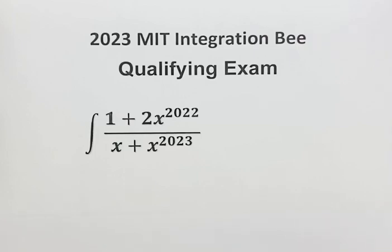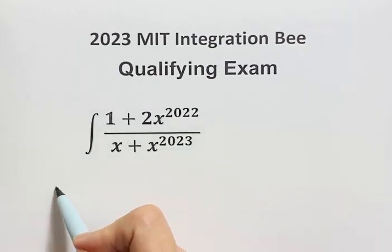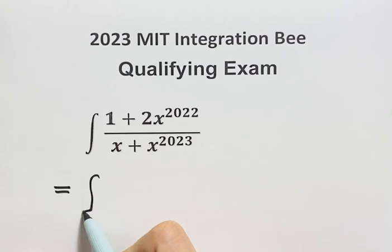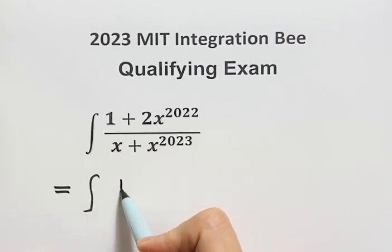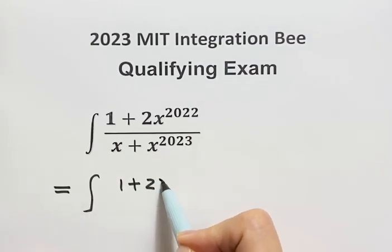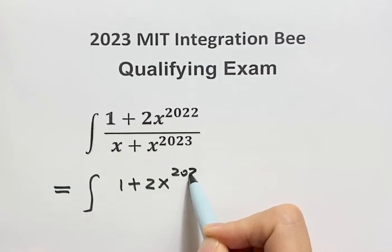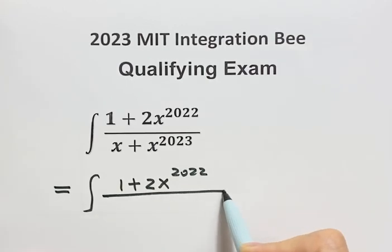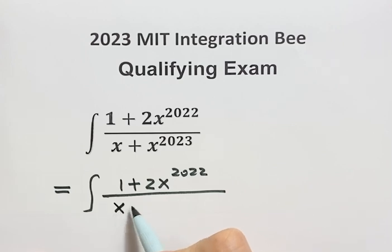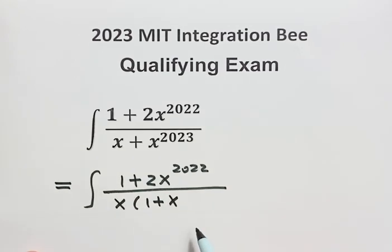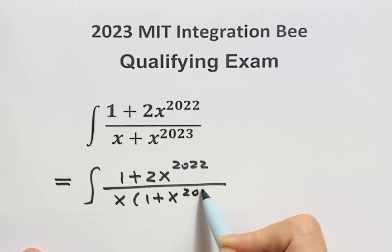In this video, we will be evaluating the integral from the 2023 MIT Integration Bee. First, let's work on the denominator. On the top we have 1 plus 2x to the power 2022. Then on the bottom, let's take out the common factor x, so we have 1 plus x to the power 2022.